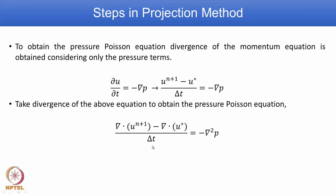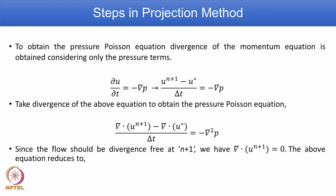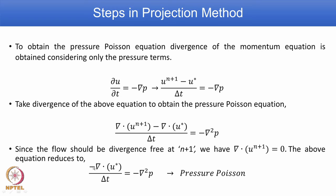We can repeat all the steps for the v momentum equation. Since the flow should be divergence free — that is ∇·v = 0, meaning continuity is satisfied — at the new time level n+1 we require ∇·u^(n+1) = 0. Using this condition, the equation reduces to −∇·u*/Δt = ∇²p, and this is the pressure Poisson equation.